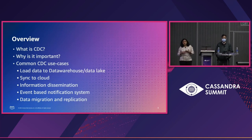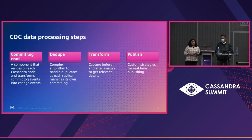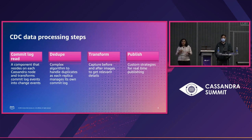CDC is also one of the most popular choices used by customers for data migration and data replication. In Cassandra, CDC is enabled by setting a property at both the node level and table level. Once the CDC properties are set, the data is available in the CDCRAW directory, from where customers can stream the data.